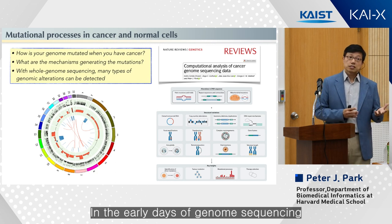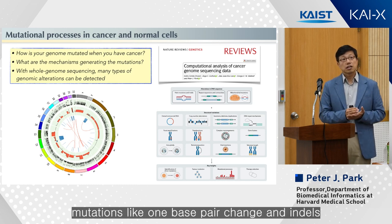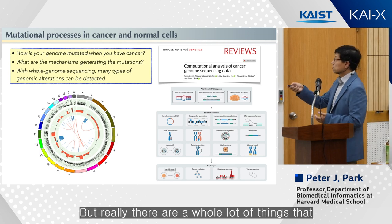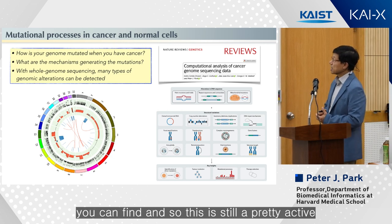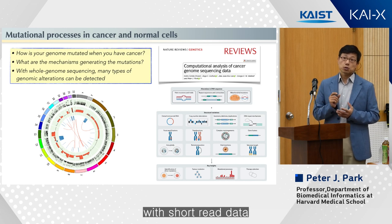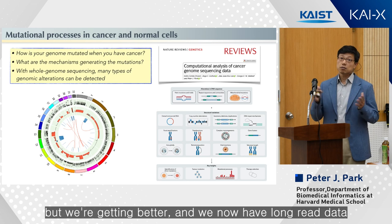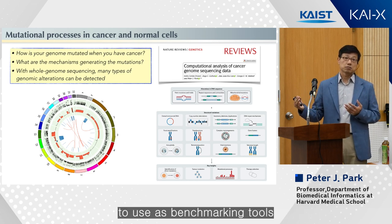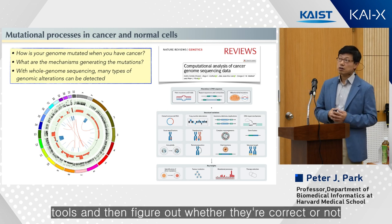In the early days of genome sequencing, we really talked about point mutations — single base pair changes and indels — and then copy numbers. But really there are a whole lot of things you can find, and this is still a pretty active area. There are lots of things not possible with short read data, but we're getting better. We now have long read data to use as benchmarking tools, so we can develop short read-based tools and figure out whether they're correct or not.